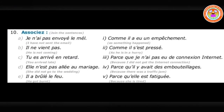Now we go to the 10th exercise. We are going to associate two sentences with the expression of cause. The questions given are: Il n'a pas — meaning I have not sent the mail, so you have to give a reason. Then il ne vient pas — he has not come. Then tu arrives en retard — you arrived late. Then elle n'est pas allée au mariage — she has not gone to the marriage. Then il a brûlé un feu — he has passed through the signal.